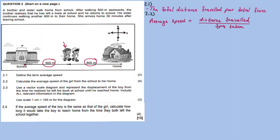From school all the way to her home it's 500 plus 800. So the distance is 500 plus 800 meters, divided by the total time taken. She takes 1800 seconds — remember in physics we don't use minutes or hours; SI units must be in seconds. So 30 minutes in seconds is 30 times 60, which gives 1800 seconds.